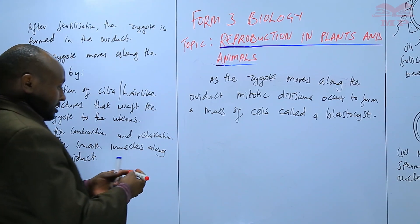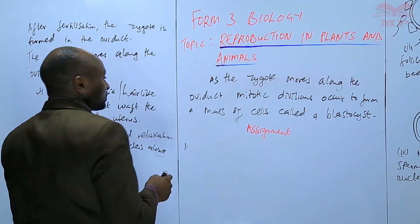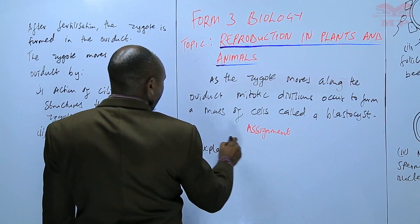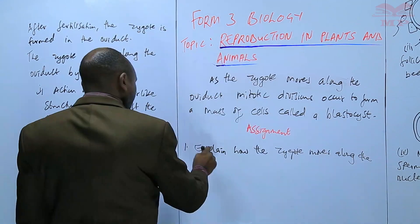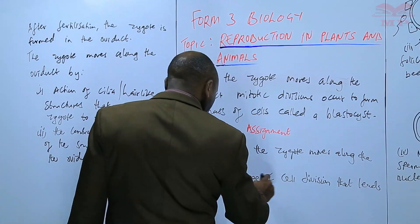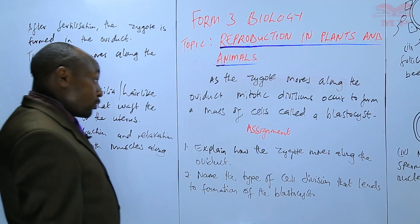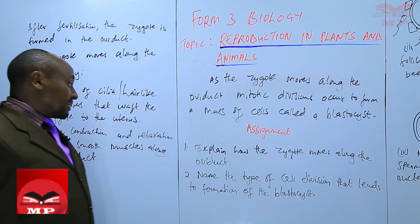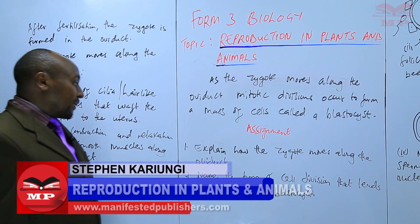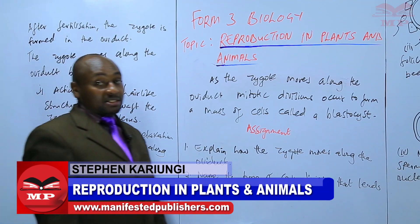We'll have an assignment at that point. First question, explain how the zygote moves along the oviduct. Two, name the type of cell division that leads to formation of the blastocyst.